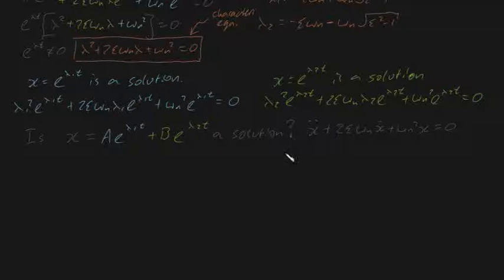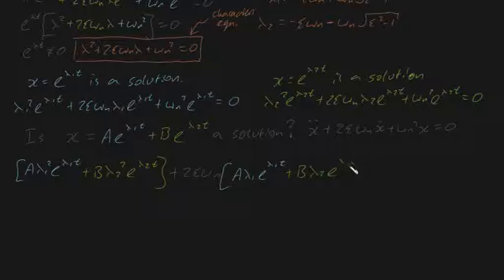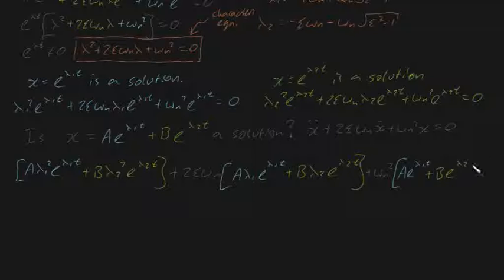Let me substitute this into the equation. The double derivative term gives a times lambda 1 squared e to the lambda 1 t plus b lambda 2 squared e to the lambda 2 t. Then the first derivative term gives plus 2 zeta omega_n times a lambda 1 e to the lambda 1 t plus b lambda 2 e to the lambda 2 t. Finally, the omega_n squared times x term gives plus omega_n squared times a e to the lambda 1 t plus b e to the lambda 2 t. If this equals zero, we've shown this is a solution.